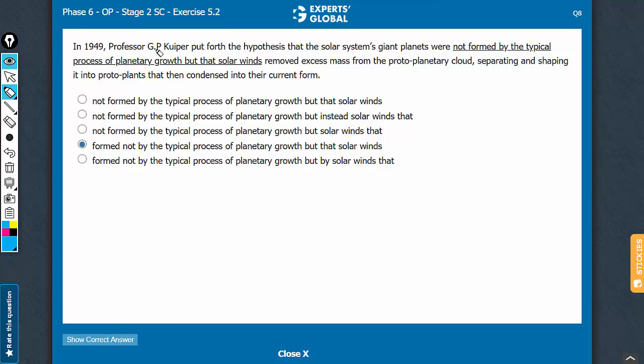In a certain year, Professor put forth the hypothesis that the solar system's giant planets were not formed by A. If this is the construction, then we need but by B. But you see, it's not formed by A, but by B. After but, answer choice A is incorrect. Answer choice B also has a similar construction.